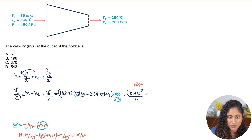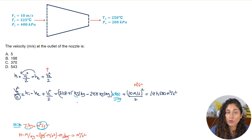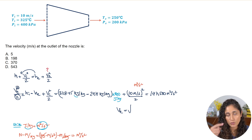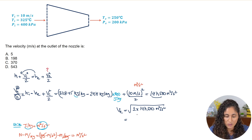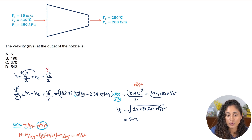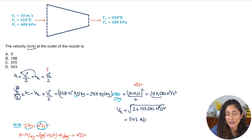Plugging in all the numbers gives 147,500 m²/s². To find the exit velocity, we take the square root of 2 × 147,500 m²/s², which gives us 543 m/s. The square cancels with the square root, leaving meters per second — the correct unit for velocity. Looking at the multiple choice, the answer is D.